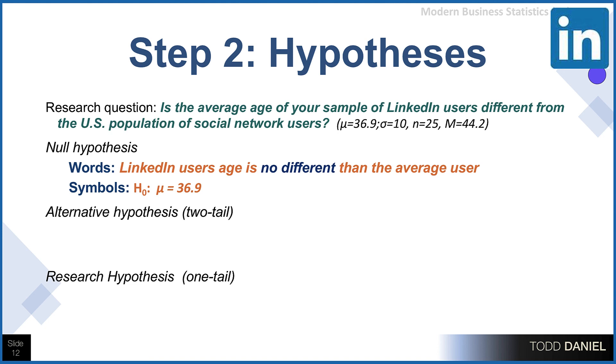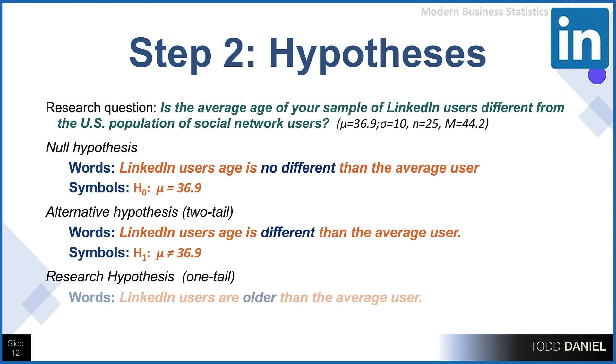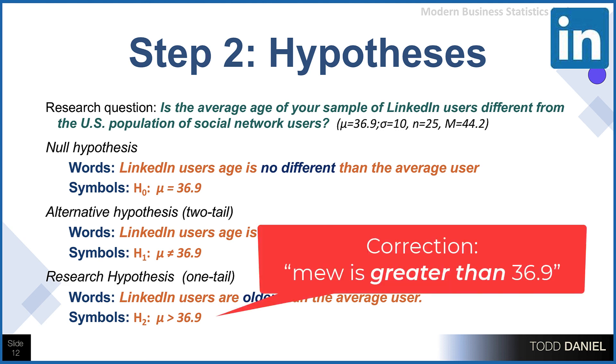For our alternative hypothesis, we would say, in words, that LinkedIn users' age is different than the average user. And in symbols, we would write that as h₁: (you may also use hₐ:) μ ≠ 36.9. Now that is the setup for a two-tailed test, which is exactly what we're going to use. If, however, you were going to use a one-tailed test, we might say something like this. The LinkedIn users are older than the average user. We're establishing a direction of change. And therefore, this alternative hypothesis would be written in symbols as h₁: μ > 36.9.